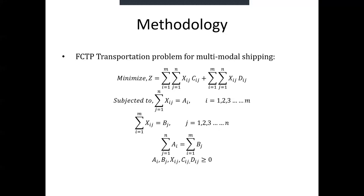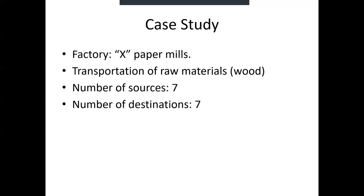For the case of application, we selected a renowned paper mills company and considered their transportation of raw material, which is wood. They basically buy wood from seven sources and deliver to seven destinations all over Bangladesh. We are to optimize the amount shipped and the shipment routes to minimize the overall transportation cost.